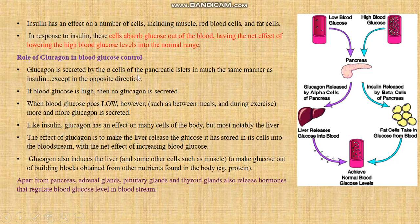Glucagon is secreted by the alpha cells of the pancreatic islet in much the same manner as insulin, except in the opposite direction. When there is a high blood glucose level, insulin comes into picture; when there is a low blood glucose level, glucagon comes into picture. When blood glucose goes low, more and more glucagon is secreted. Like insulin, glucagon has an effect on many cells, but most notably the liver. The effect of glucagon is to make the liver release the glucose it has stored into the bloodstream, with the net effect of increasing blood glucose.